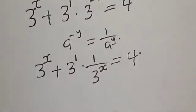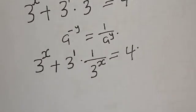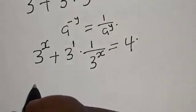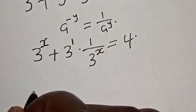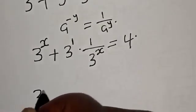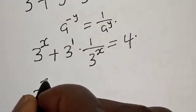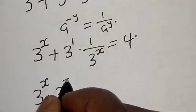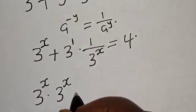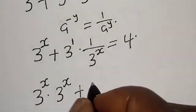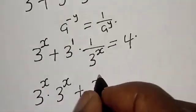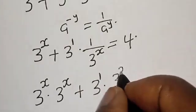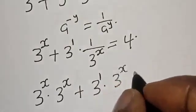Now let's multiply all terms by 3 raised to power x. Then we have 3 raised to power x multiplied by 3 raised to power x, plus 3 raised to power 1 multiplied by 3 raised to power x.